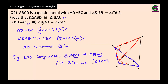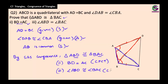For the third part, we need to show angle ABD equals angle BAC. These angles are in the same corresponding position in their respective triangles. Therefore, angle ABD is congruent to angle BAC because they are corresponding parts of congruent triangles (CPCT).